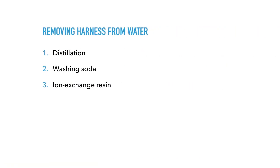Removing water hardness can be achieved by three methods. Distillation is a procedure you should be familiar with; however, this is both time consuming and very expensive. Washing soda crystals could be added to water to soften it by forming insoluble calcium carbonate. And finally, ion exchange resins can be used to remove water hardness. We will talk more about this in the next slide.